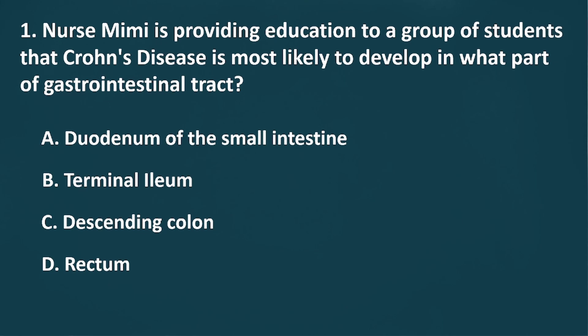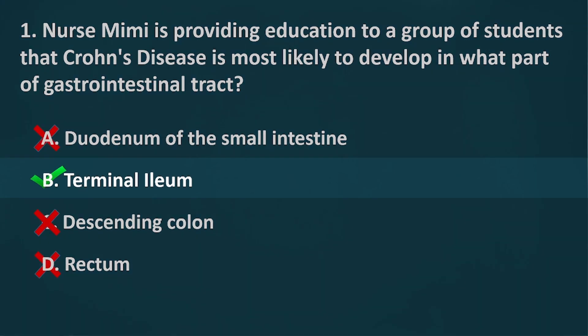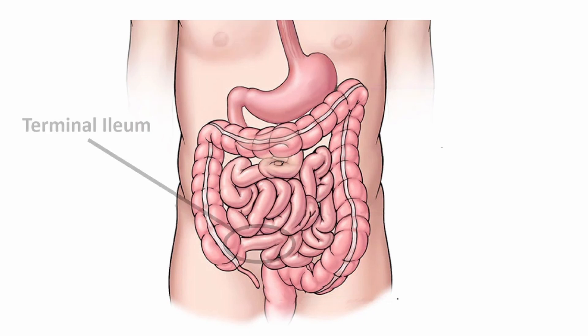The correct answer is Letter B, Terminal ileum. Though Crohn's disease can happen in any part of the GI tract, most patients develop it in the terminal ileum. The reason why Crohn's disease is primarily located in the distal part of the ileum remains unexplained. However, it is believed to be most likely linked to the concentration of bacteria in that area.